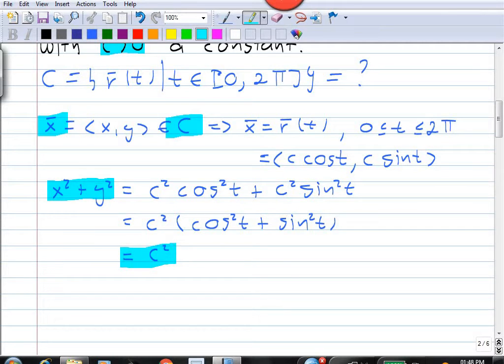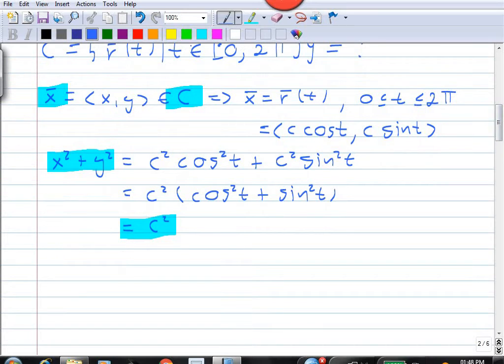So, if we have a point x on this curve C, then this point satisfies x² + y² = c². And this equation x² + y² = c², that's familiar. That's just the equation for a circle.